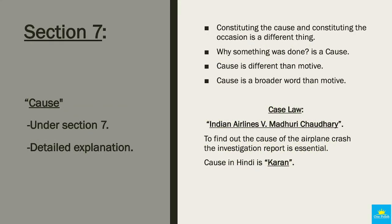Now what does the cause mean under Section 7? Karan ka gathan karna aur aasar ka gathan karna alag-alag baatein hain. Kyon kuch kiya jaata hai? Ek karan hai. Karan maqsad se alag hai. Karan maqsad se adhik vyapak shabd hai — uska scope bada hai.